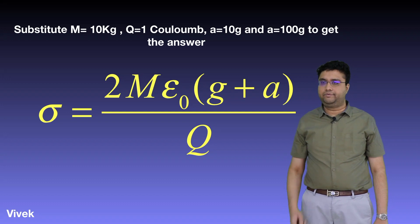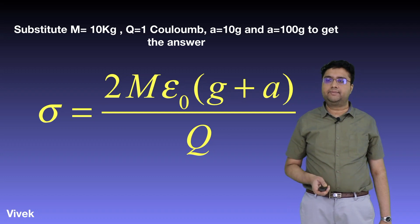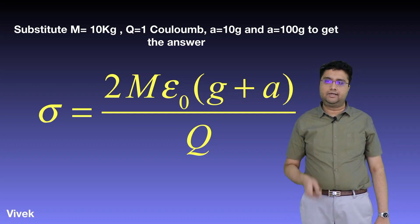A is set to the desired requirement value. That is 0 in one case when the object is just beginning to move. In the second case, a equals 10g because we want the object to acquire 10 times acceleration due to gravity. And in the third case, 100 times acceleration due to gravity. Charge Q is 1 Coulomb. Substituting, we get the answer.